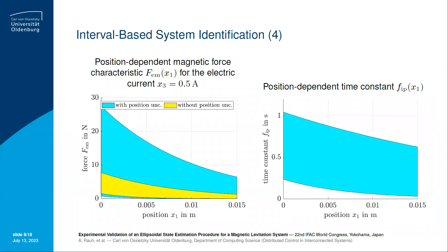What you can see on this slide is a visualization of both identified characteristics. On the left-hand side, the force characteristic is shown in Newton for a fixed electric current and for position variations between 0 and 15 millimeters. On the right-hand side, we have considered the same variation of the position, but the quantity depicted here is the time constant variation for the electric current circuit. Notably, the uncertainty in the position measurement has a large influence, as shown on the left-hand side, where we have performed a comparison of the identification scheme firstly without considering the position uncertainty shown in yellow, and with taking into account the corresponding position uncertainty.